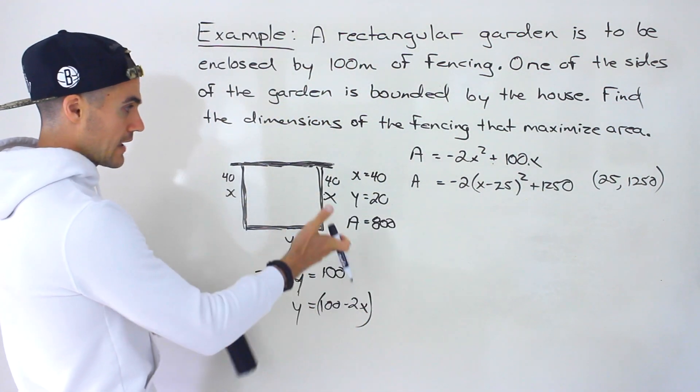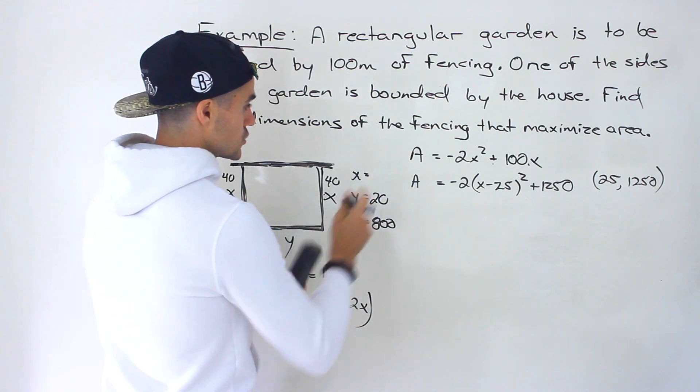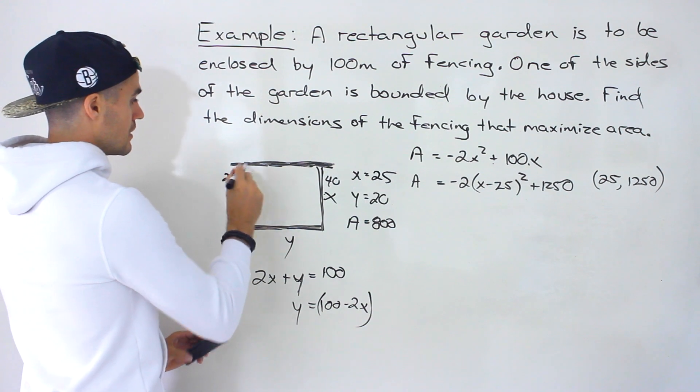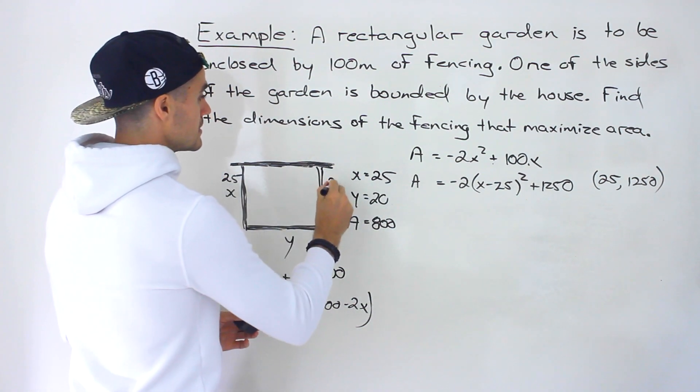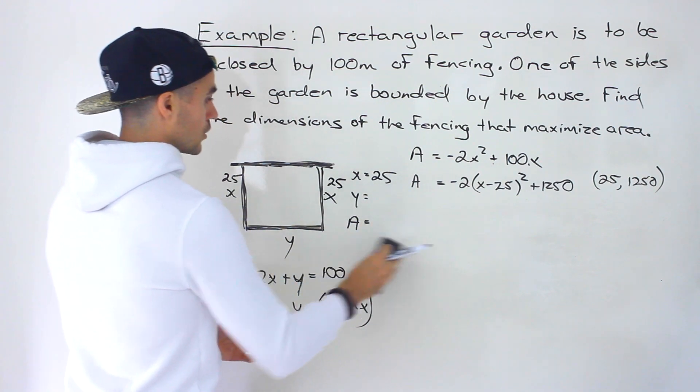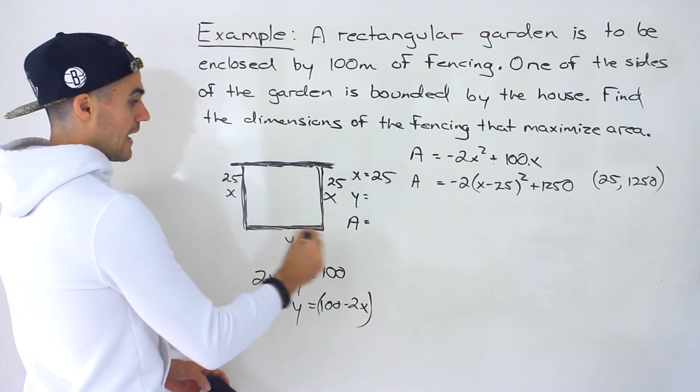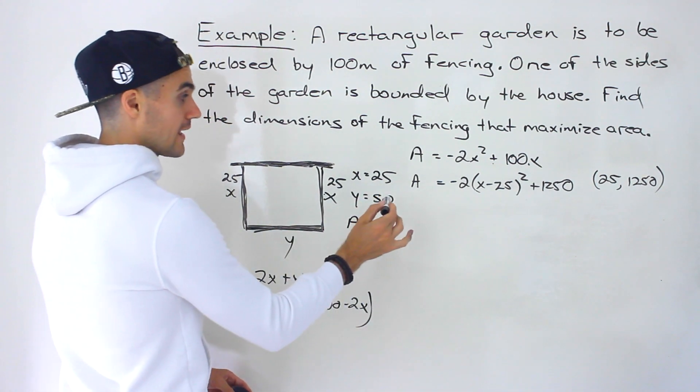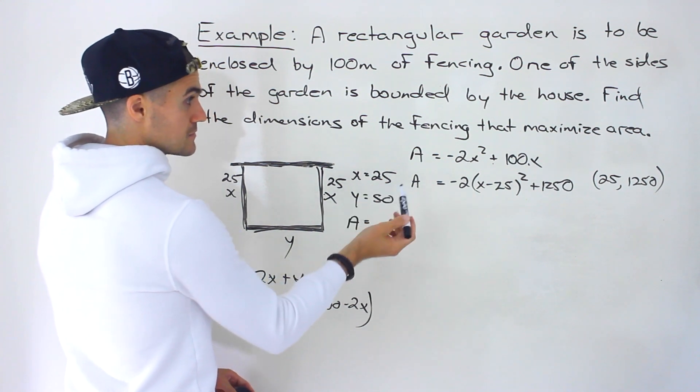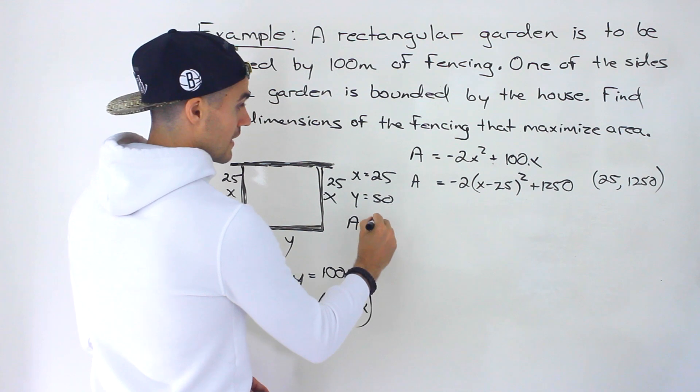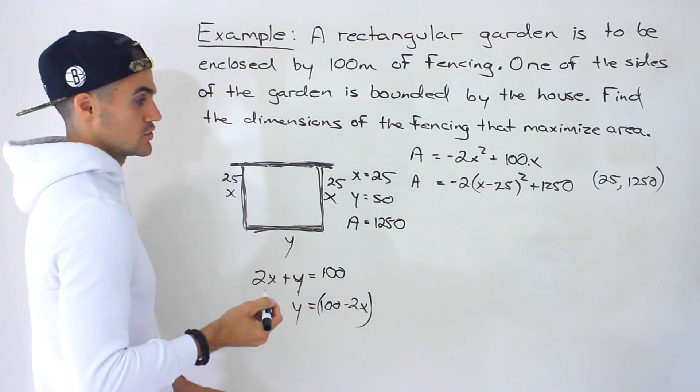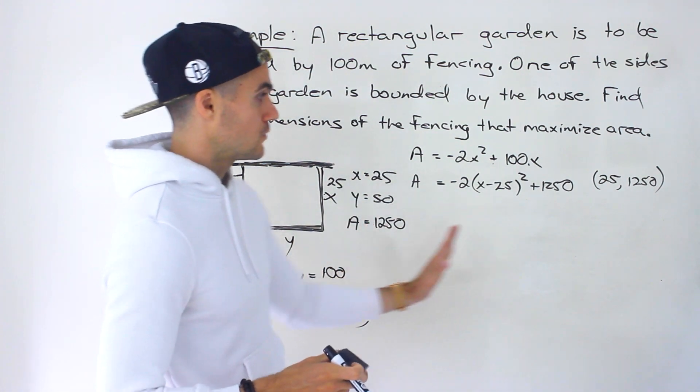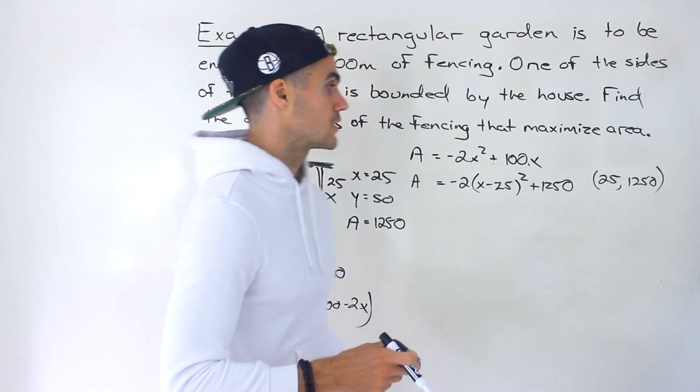Well, we could test that as well, doing it manually. So let's say X is 25 over here. So that means this is going to be 25. That means this is going to be 25. So then what is the Y value going to be? Well, we've got 25, 25, which is 50 has to be 100 meters of fencing in total. We get Y to be 50. Y to be 50. And then what is 50 times 25? Well, notice that that is indeed going to give us 1250. Right? So even when we manually check it, we could be pretty confident that that is the correct coordinate.